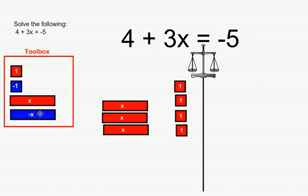Now on the right side, we have negative 5. To represent negative 5 using tiles, we're going to use five blue tiles.